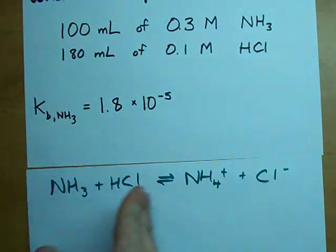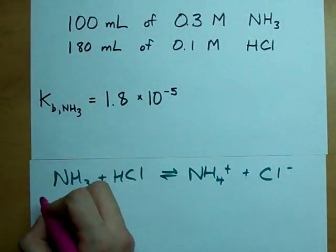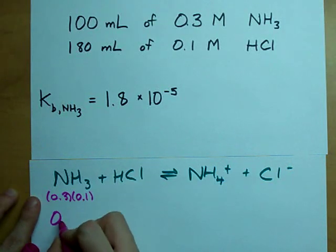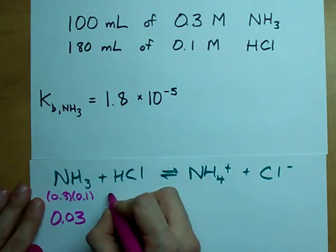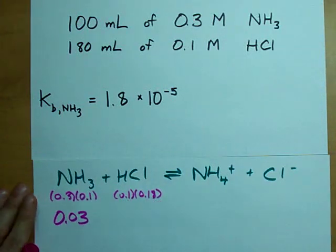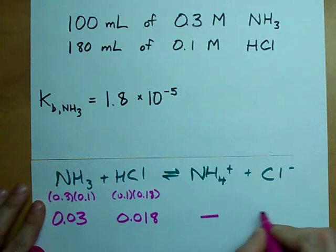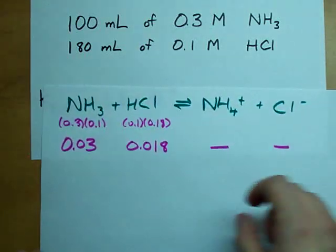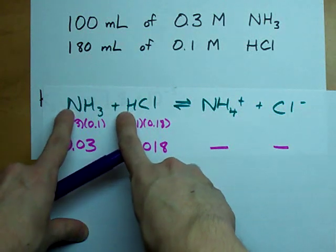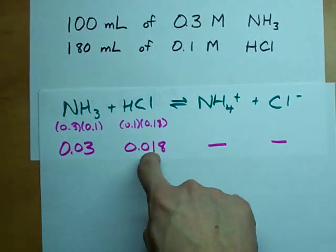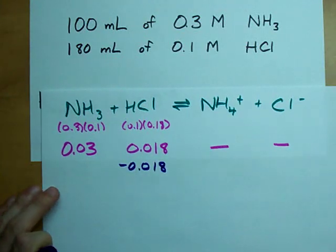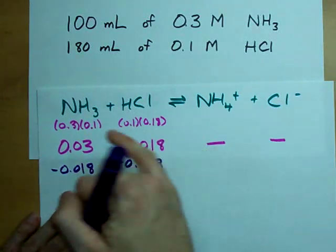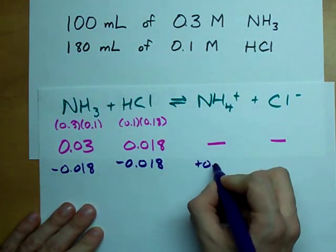Step 2: figure out how many moles of each reactant you have. That's N equals C times V. The number of moles is the concentration, 0.3 moles per liter, times the volume, 0.1 liters, giving 0.03 moles. Concentration times volume: 0.1 times 0.18 gives 0.018 moles. I don't start with any products — that's why they're called products. Figure out which of these is used up first. It's a one-to-one ratio, so they're consumed at the same rate, but I start with fewer of the HCl, so it will be the one to get used up. I'm going to lose all 0.018 moles of those, and because it's a one-to-one ratio, I will also lose 0.018 moles of that — all the changes are 0.018.